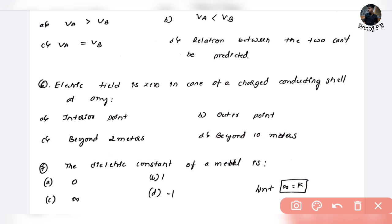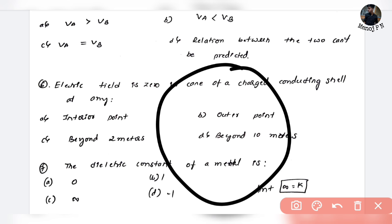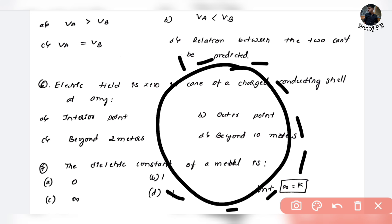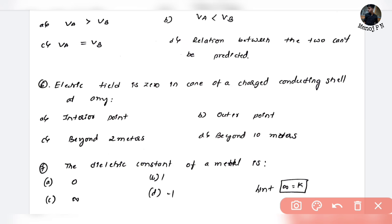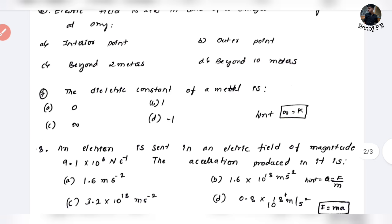Next: the electric field is zero in the case of a charged conducting shell — specifically at the inner part. If you look at the charge, it accumulates on the outer surface. So inside, the electric field is zero. Option A is your answer. You will have to derive this from first principles — it is a direct question from the derivation.